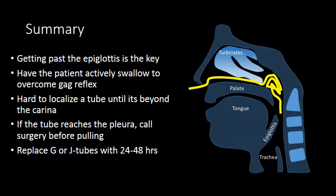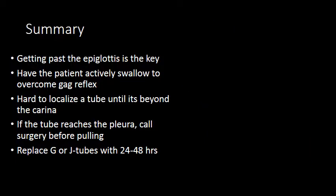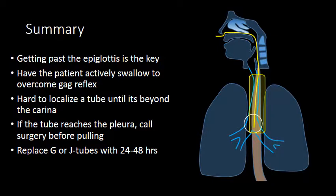In summary, getting past the epiglottis is key — have the patient actively swallow to overcome the gag reflex and allow for esophageal intubation. When you place the catheter in a presumed esophageal location, it can be hard to localize the tube on a plain film until it goes beyond the carina; many protocols use a two-step process. If you notice a catheter going into one of the bronchi all the way out to the pleural surface, call surgery before pulling it, as pneumothoraces and bronchopleural fistula can result. If you have a dislodged gastrostomy or jejunostomy catheter with a mature track, maintain that track by placing a soft catheter within 24 to 48 hours, then send the patient for replacement with a proper tube.